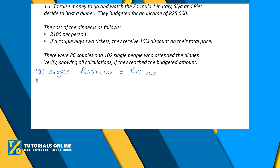Then there were 86 couples. That will be a little bit more tricky to work out because there's a discount you have to calculate first. If couples buy tickets at 100 rand each, they would have paid 200 rand per couple. But it says there's a 10% discount, so we're going to subtract 10% of 200 rand.